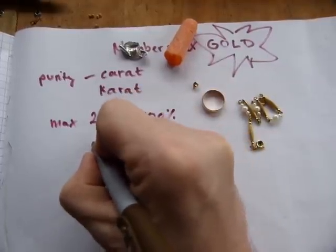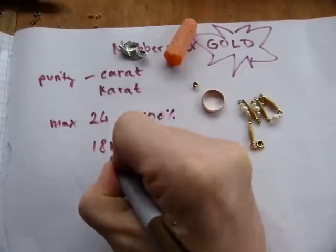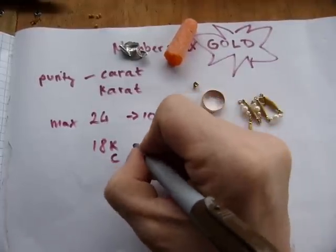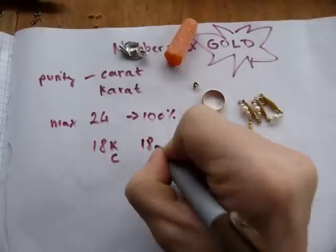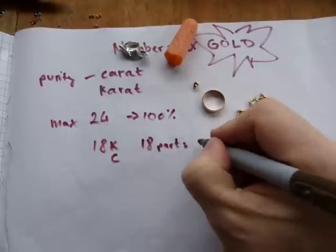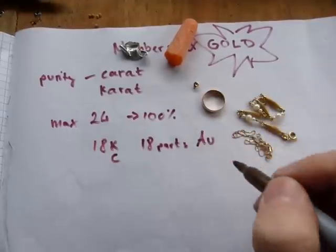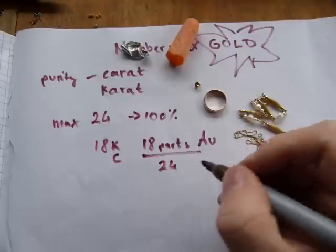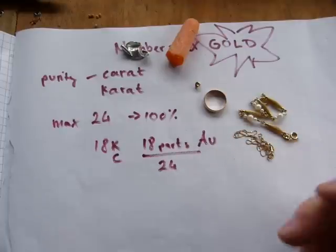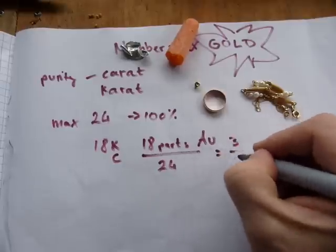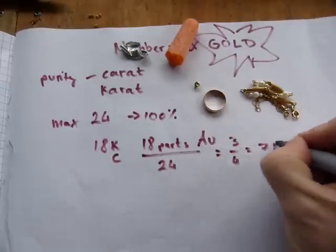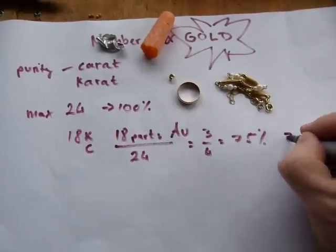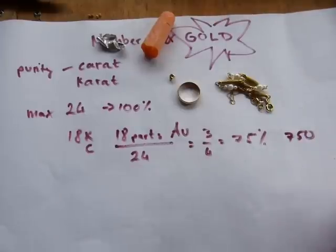For example, 18-carat gold — written as 18K or 18C — means the gold is about 75% pure. That comes from 18 parts being gold (Au is the chemistry symbol for gold) out of a possible 24 parts, with 24 representing the purest gold. So 18 out of 24 is the same as 3 out of 4, which equals 75%. In the thousand-base millesimal system, this would be called 750 gold.